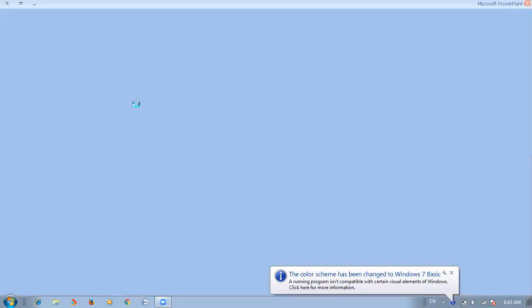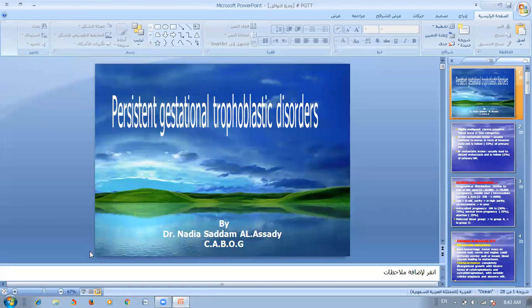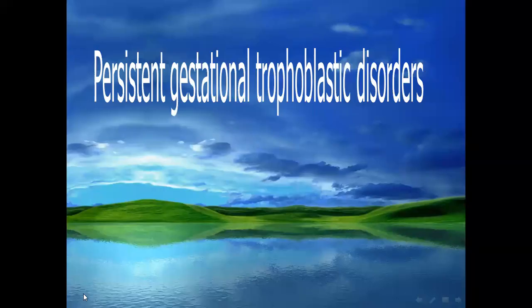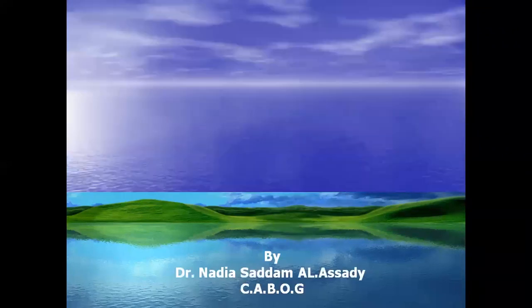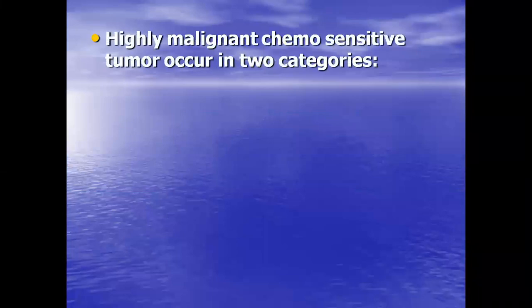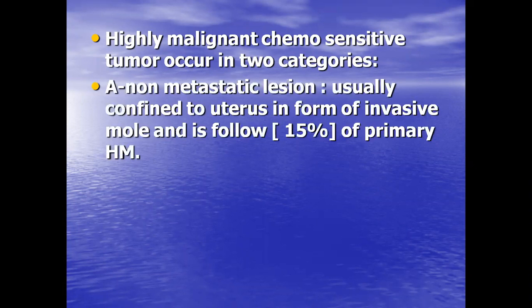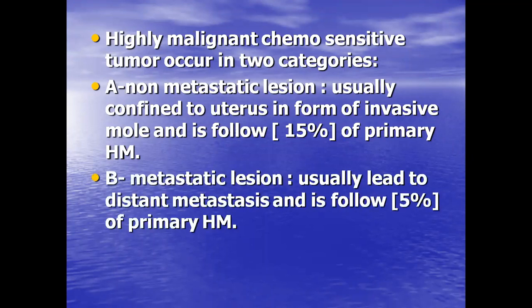Today's lecture is about the best of gestational trophoblastic disorders — a highly malignant, chemo-sensitive tumor occurring in two categories. Non-metastatic lesions are usually confined to the uterus in the form of invasive mole, followed in 15% of primary hydatidiform moles. Metastatic lesions usually lead to distant metastasis and are followed in 5% of primary hydatidiform moles.